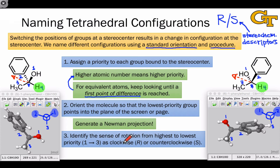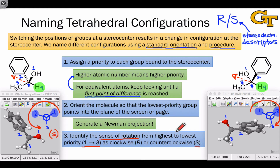The final step is to identify the sense of rotation in this standard view from highest to lowest priority — group number one to group number three. In the molecule on the left, that direction of rotation from one to two to three is counterclockwise, which points to the S configuration. In the molecule on the right, that direction of rotation is clockwise, pointing to the R configuration. So while both molecules are 1-phenylethanol, the molecule on the left is S-1-phenylethanol and the molecule on the right is R-1-phenylethanol.